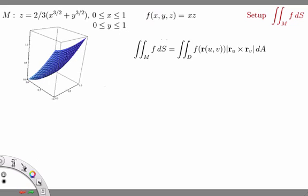This is the surface that's the domain of our function, which is f(x,y,z) equals x times z. What we want to do is use some parameterization, which I'm calling r(u,v), to rewrite this surface integral as a double integral. So f dS becomes f(r(u,v)) times the magnitude of r_u cross r_v dA.